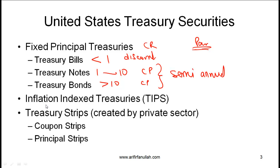We also have inflation-indexed treasuries called TIPS — Treasury Inflation Protection Securities — and we also have the concept of STRIPS, which are actually created by the private sector but typically from fixed principal treasuries, so they are considered credit-risk-free. More on this on the next slide.